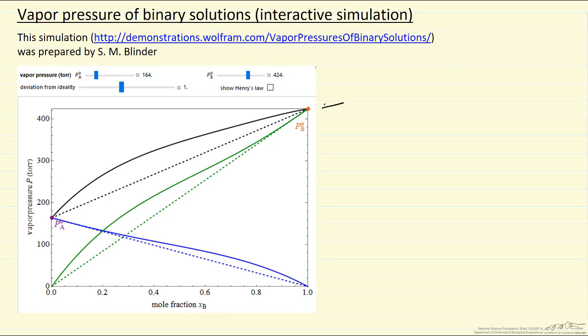The saturation pressures correspond to these two endpoints. If behavior for the mixture were ideal, namely if it obeyed Raoult's law, then we would have this dashed line.